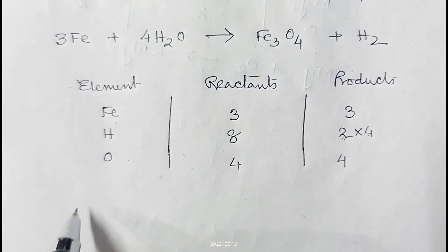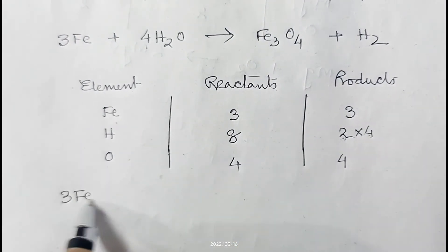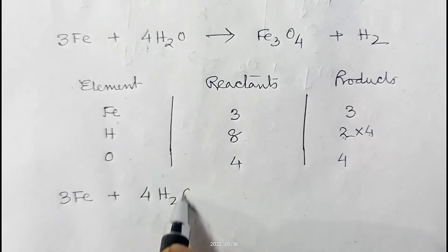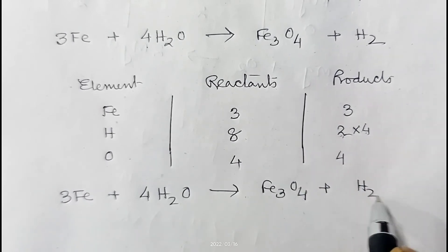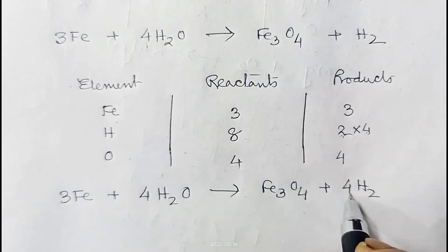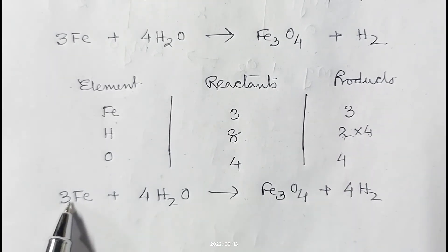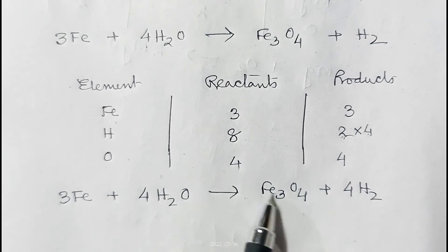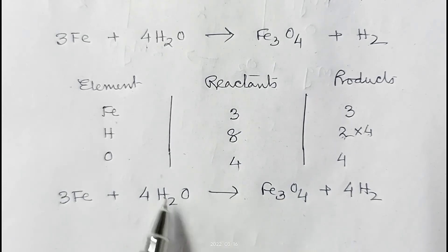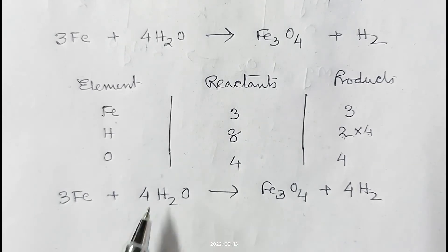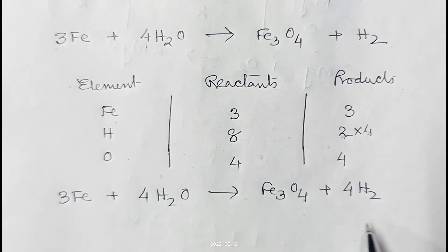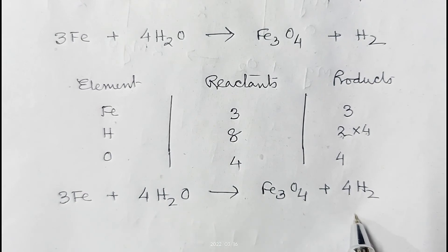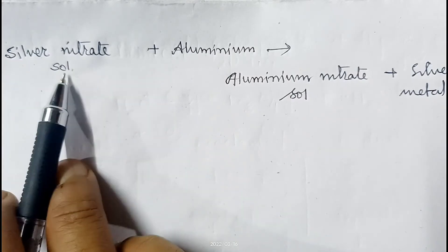We just need to multiply H₂ by 4. This gives: 3Fe + 4H₂O → Fe₃O₄ + 4H₂. Now check: three atoms of iron on each side, eight atoms of hydrogen on each side, four atoms of oxygen on each side. The number of atoms of all elements are the same on both sides, so the equation is now balanced.